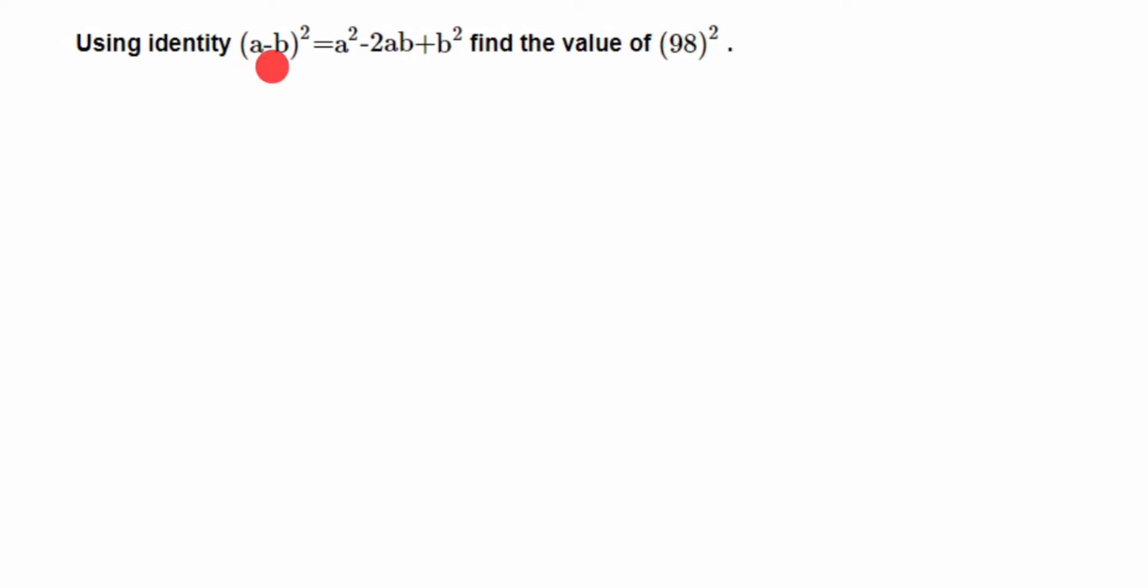It's like (a - b)² and here we have given 98². So we have to write down 98 like some number minus some number should be equal to 98.